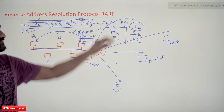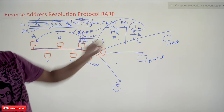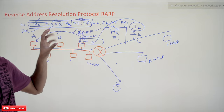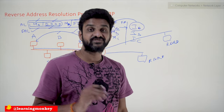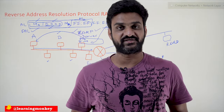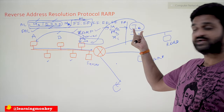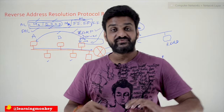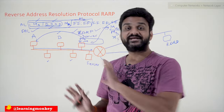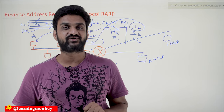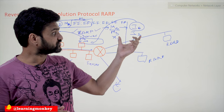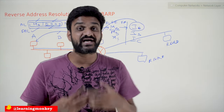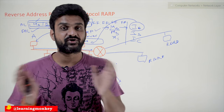Another problem is that this table is static — for every MAC address, there must be a fixed IP address, meaning every system on the network has its own dedicated IP address. But these days that is not the case. We don't use constant or static IP addresses. If you have MAC address MA, it doesn't mean you always have the same IP address. Such systems are not used these days, and these implementations are no longer in use.